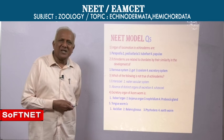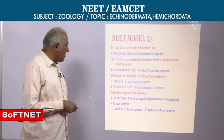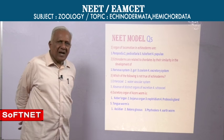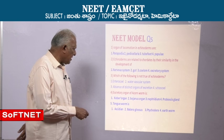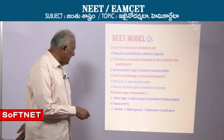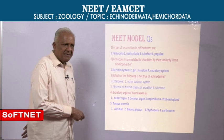Excretory organ of acorn worm — that is hemichordate — is the proboscis gland. Bojanus organs are found in Mollusca; nephridium in the case of annelids. Balanoglossus is called the tongue worm because glossa means tongue and balano means acorn. It is also called acorn worm.